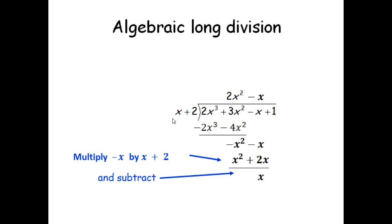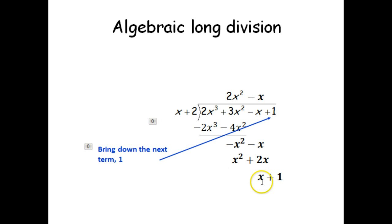So I bring down my 1—excuse me, we bring down our 1 first. Now I look at this and say, what do I have to multiply x by to give me x? Well, it's itself, so it would just be 1, a positive 1. So now I'm going to write that right up top there. Again, I go through the same process. 1 times x will give me x, 1 times 2 will give me 2. So I've got x plus 2.